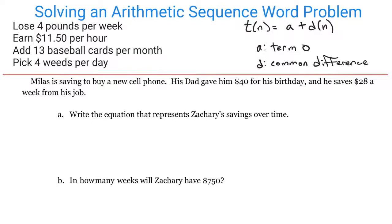We know this is arithmetic because he saves $28 each week from his job - that's a constant amount. We're also given information about where he starts: $40 from his birthday.